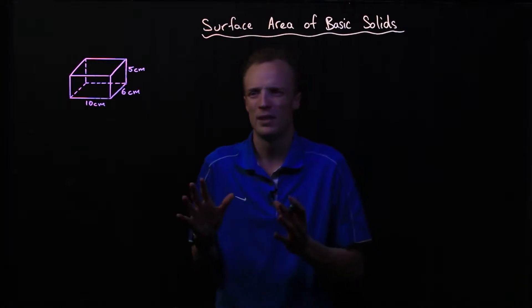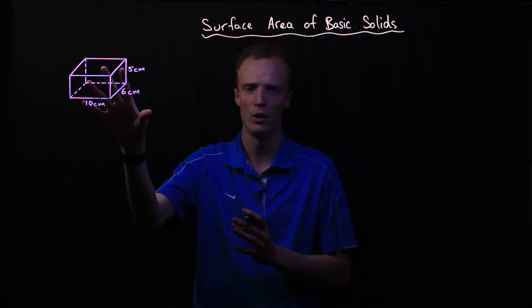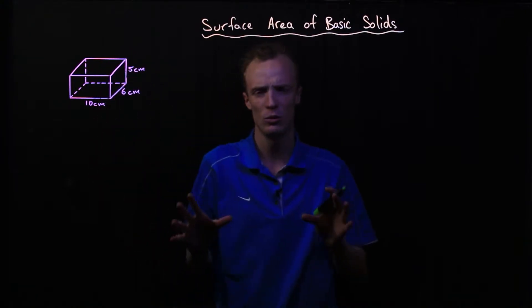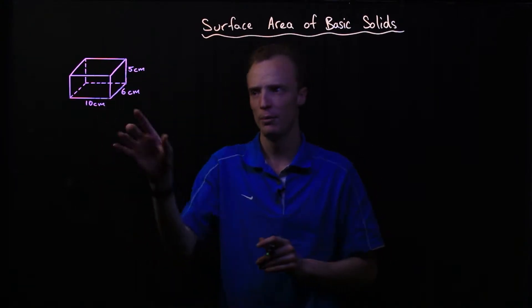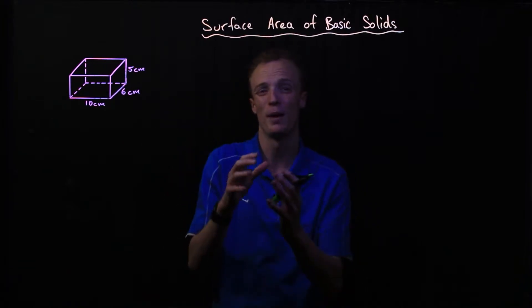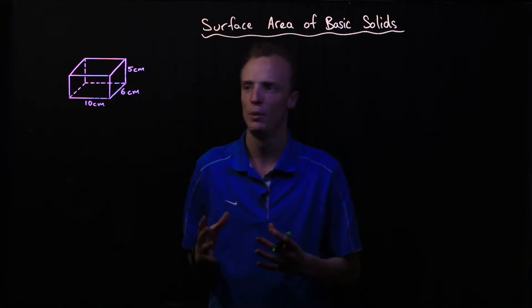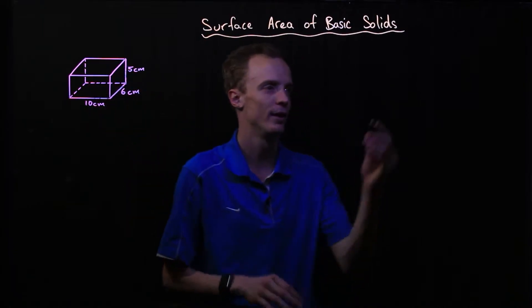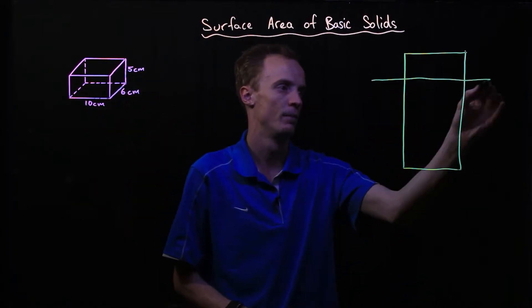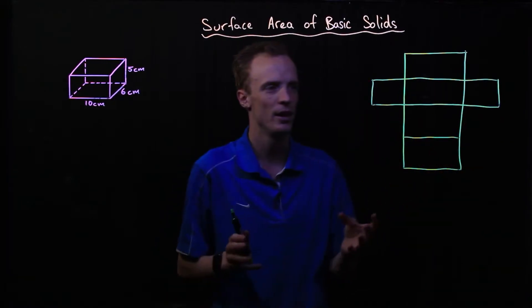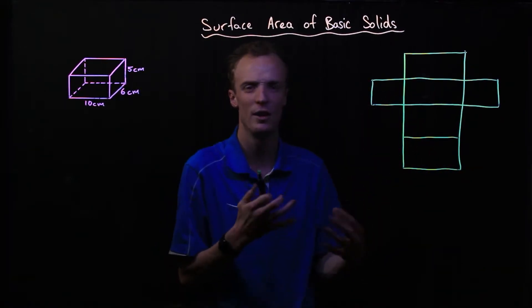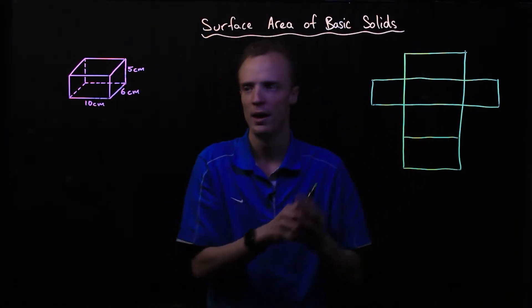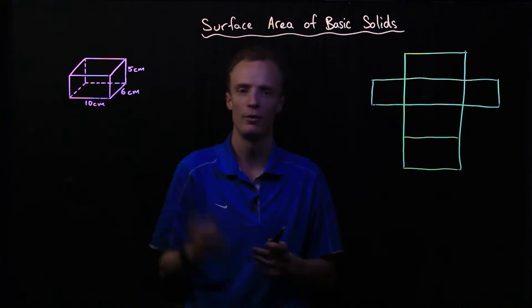A net diagram is essentially where we take the shape that we've got and unfold it to create a two-dimensional diagram that represents the three-dimensional shape if we were to fold it back together. For example, if I was to unravel this shape here, it would look something like this. So here I've created this two-dimensional diagram, now known as a net. If I were to fold these back up, it would create this rectangular prism.